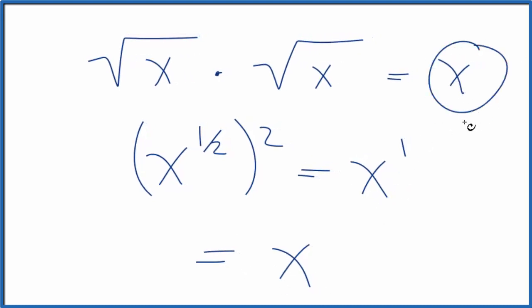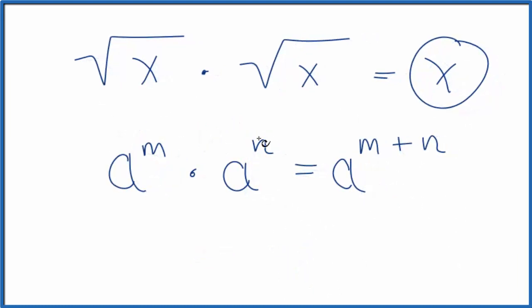One last way we can figure this out. This is the power rule for exponents, really helpful. It says if we have a^m times a^n, we're just going to add these together: a^(m+n). So we're using x here, x^(1/2), because we said x^(1/2) is the same thing as the square root of x.